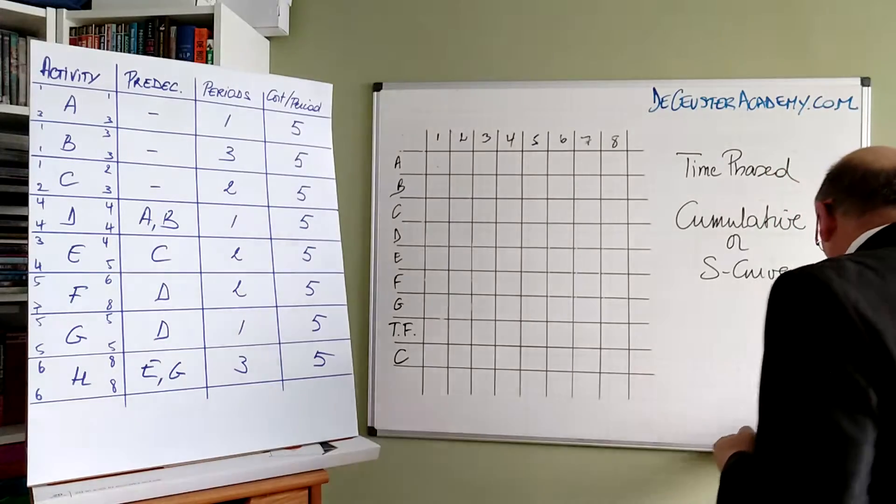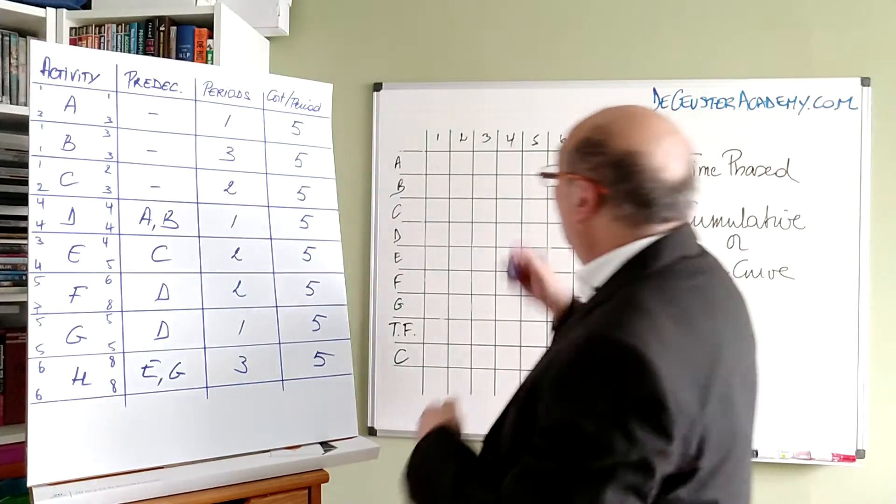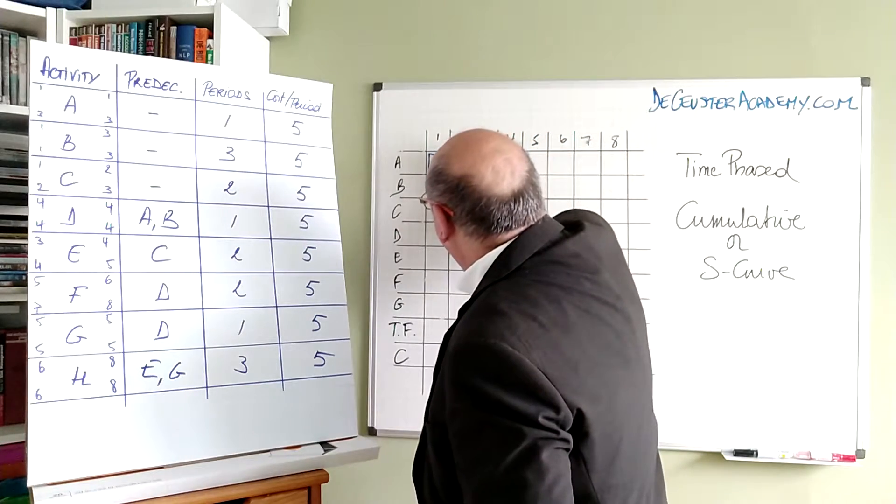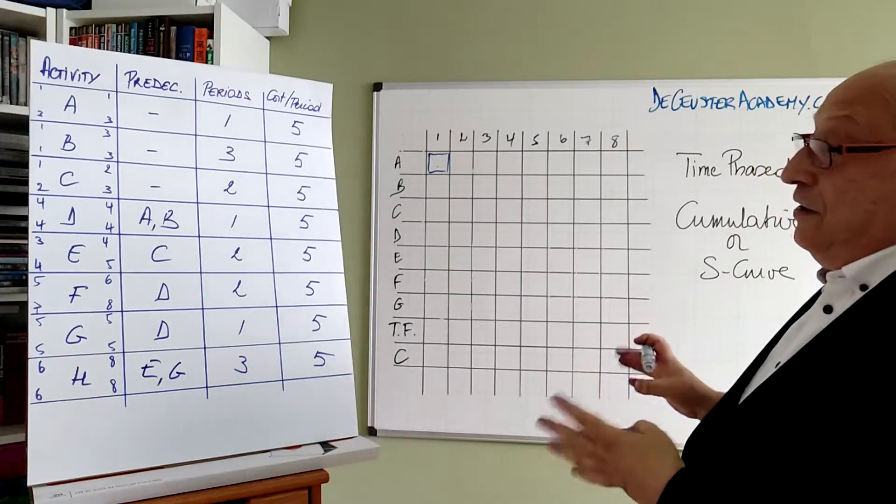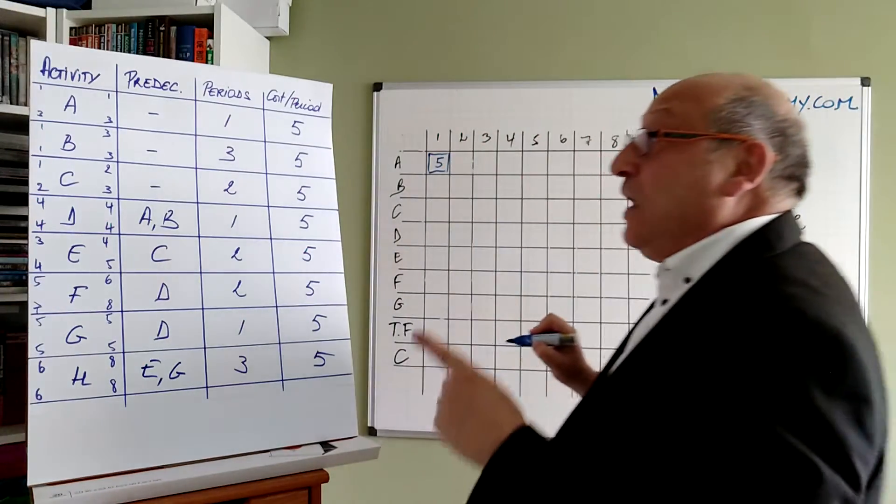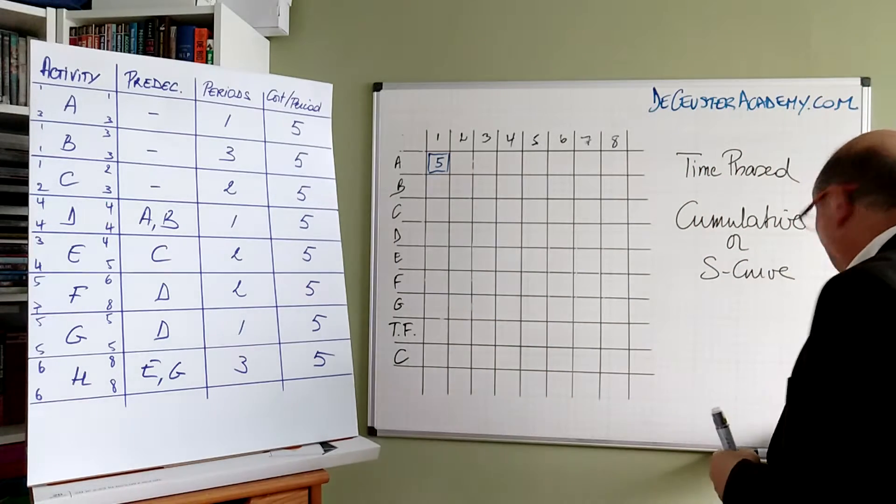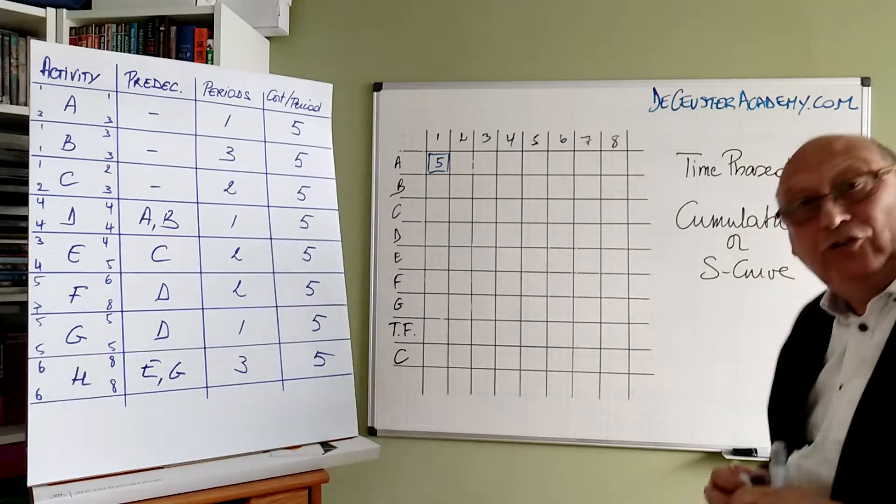Now let's draw this on the Gantt chart. A has a duration of 1, so we have here A. We have the cost which is 5, which we can put in there. B is critical, so we show it in red.